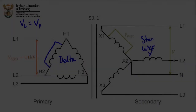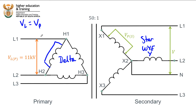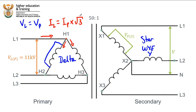Now let's look at current. If we assume current is flowing through L1, it meets a junction point and splits. So the current in the line is not the same as the current in the phase. Because the phases are separated by 120 degrees, if you work through the mathematics, the line current in a delta system equals the phase current multiplied by the square root of three. Simply remember that formula.